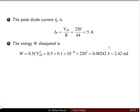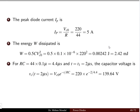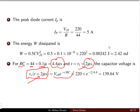The energy dissipated in the resistor equals the initial energy stored in the capacitor: (1/2)CV₀² = (1/2)(0.1×10⁻⁶)(220²) = 2.42 millijoules. The time constant τ = RC = 44 × 0.1×10⁻⁶ = 4.4 microseconds. To find the capacitor voltage at t=2 microseconds, we use VC(t) = V₀ e^(−t/RC). Substituting V₀=220 V and τ=4.4 microseconds, we get VC(2μs) = 139.64 volts.